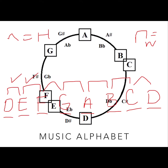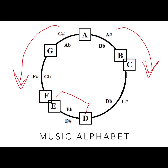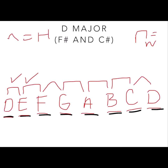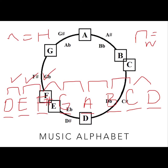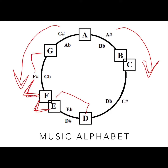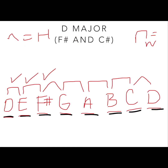Looking at our musical alphabet, D and E are already a whole step, so we check that off. The next step between E and F needs to be a whole step, but E and F are actually a half step. So to make a whole step, we need two halves — we go up to F sharp. A sharp adds a half step, making the note higher by a half step. Now we need a half step between F sharp and G, and indeed F sharp and G are already a half step, so we leave it alone.